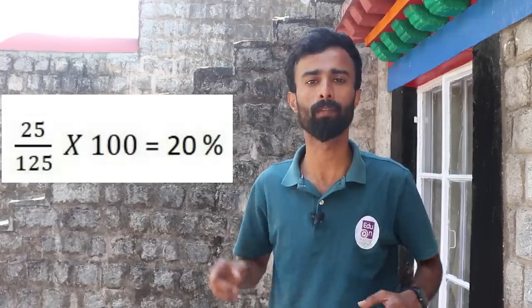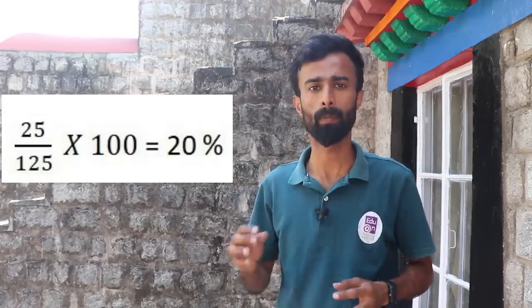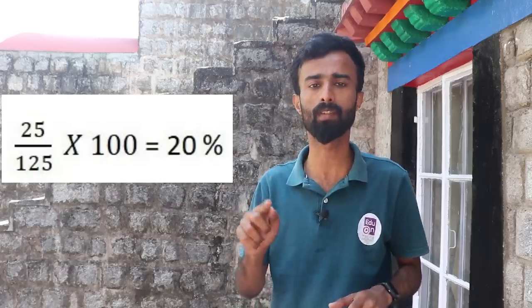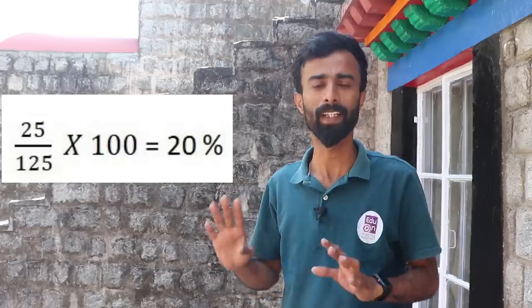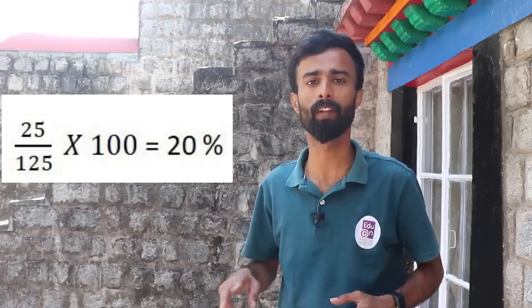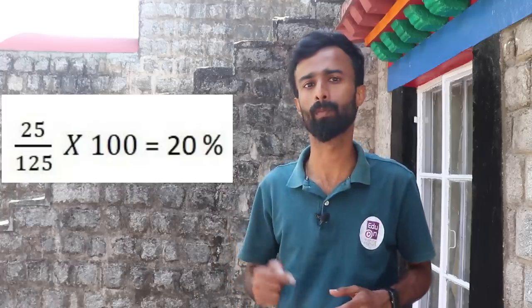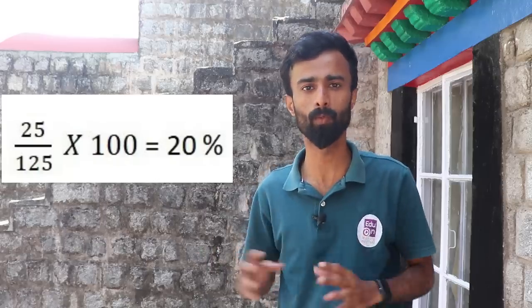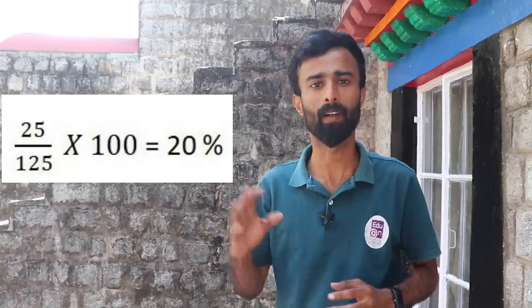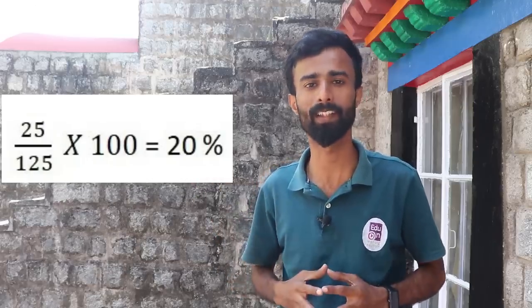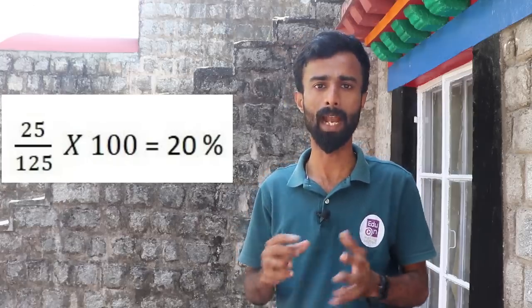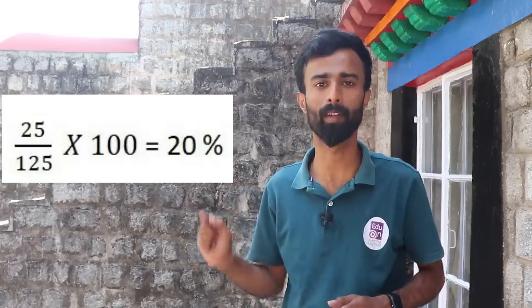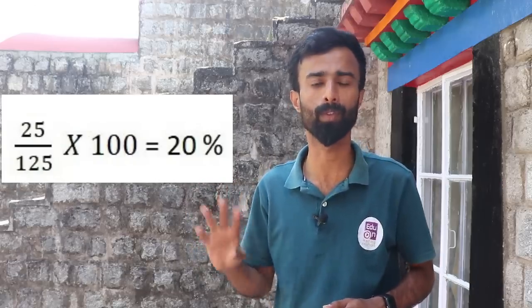So 25% free means we calculate 25 by 125. Simplifying, 25 by 125 gives us 20%. So 50% would be 100 by 5, and 20% would be easy and simple. 25 by 125, times 100, gives 20 percentage extra.